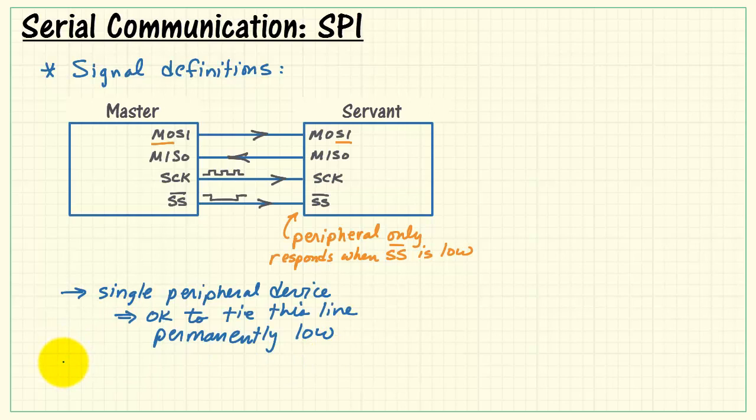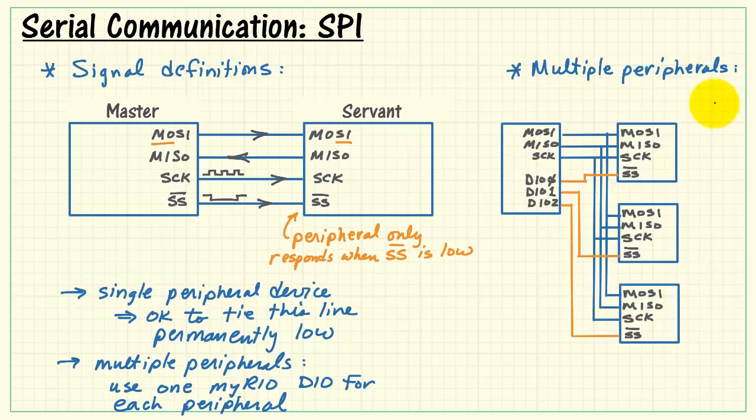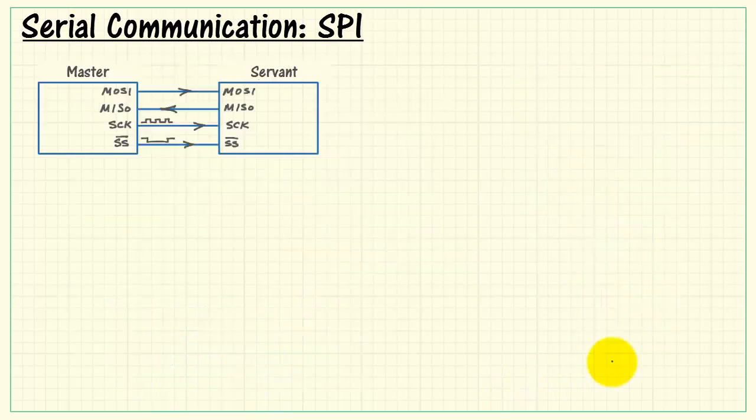If we only have one peripheral device, it's perfectly fine to just go ahead and permanently tie that line low. If you have multiple peripheral devices, however, you'll need one MyRio digital output line for each peripheral. This is how you would handle multiple peripherals. All of the three lines, MOSI, MISO, and Serial Clock are connected together, and then we use dedicated digital outputs to serve as servant select lines for each peripheral.